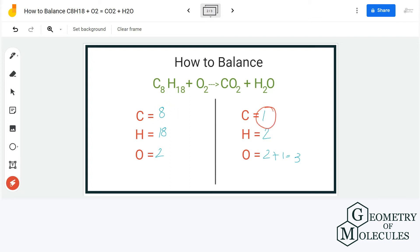So we are going to multiply this number by 8, and hence we now have 8 carbon atoms on both reactant and product sides.